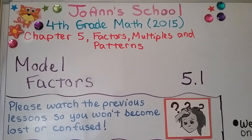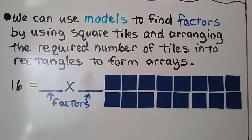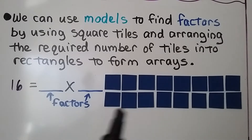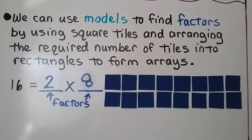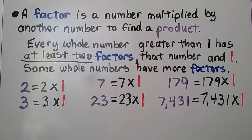We're in another new chapter, Chapter 5, all about factors, multiples, and number patterns. Lesson 5.1: Model Factors. We can use models to find factors by using square tiles and arranging the required number of tiles into rectangles to form arrays. We need to find the factors of 16. We can take 16 counters and arrange them into two rows with eight in each row, keeping arranging to find all different types of arrays that equal 16.